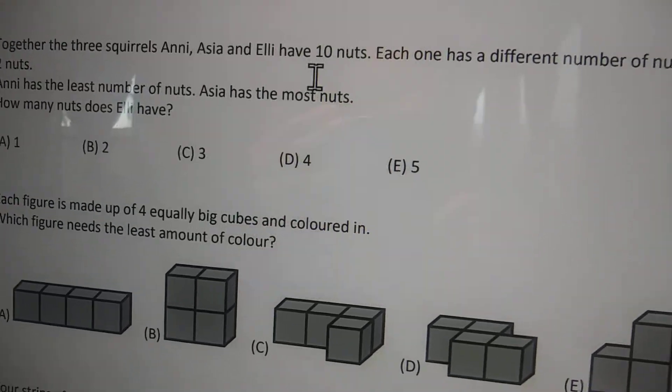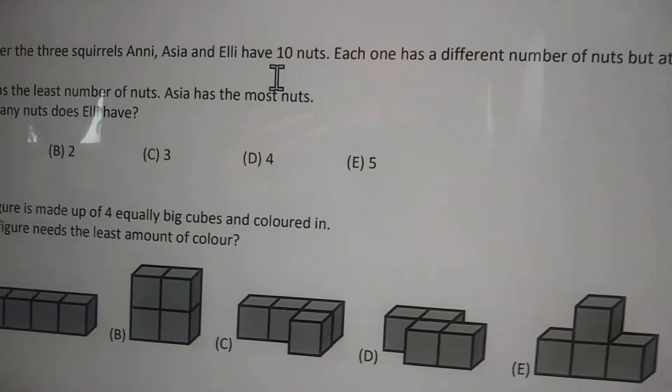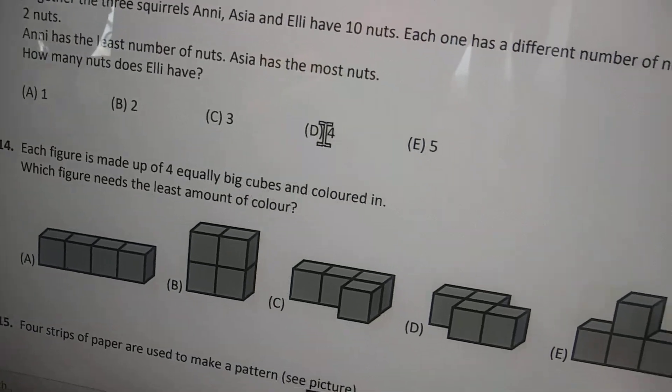Now four. If Eli has four nuts, let's pretend Annie has three. That's seven. But then Asia has to have three in order for that to equal ten. But again, Asia has the most, so she can't have the same as Annie. Answer choice D does not work.